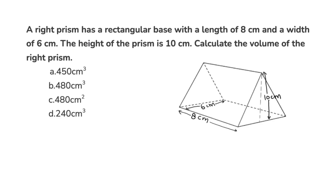A right prism has a rectangular base with a length of 8 centimeters and a width of 6 centimeters. The height of the prism is 10 centimeters. Calculate the volume of the right prism. Take a moment, solve this problem, and push play when you're ready.